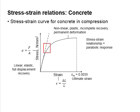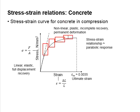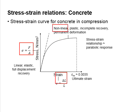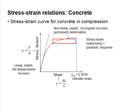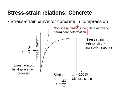Starting from a certain stage, the gradient of the curve decreases, and the reduction of the gradient decreases more rapidly at the later stage. The stress-strength relationship becomes non-linear here, which we normally term as a plastic response. Releasing the stress over these regions, you will find incomplete recovery of the strength, and there will be permanent deformations of the concrete.